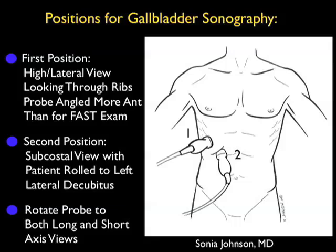The second position is known as the subcostal view, as shown in probe position 2. It's best to roll the patient into the left lateral decubitus position so that the gallbladder is closer to the probe. From the subcostal position, we can push down directly on the gallbladder to elicit the sonographic Murphy's sign. From both of these positions, we should rotate the probe from long axis with the probe marker towards the patient's right shoulder to the short axis configuration with the probe marker over towards the right side to completely inspect through the gallbladder for any pathology.